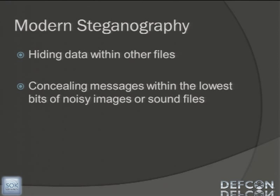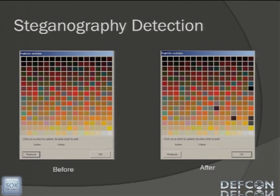Modern steganography — a lot of people use that today; you probably use it and don't even know it. Metadata in all your MP3s is technically steganography. What they do to hide things currently is hide data in the lowest bits — noisy bits — things that are beyond the scope of what you would hear in an MP3 or view in a movie file or picture. Where it comes in is that this also creates entropy, and that's how it can be detected. So you have to be careful if you're hiding messages because there are ways people will find it.